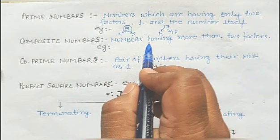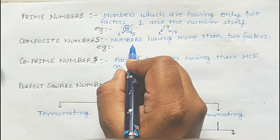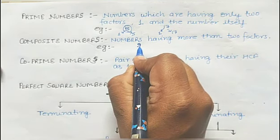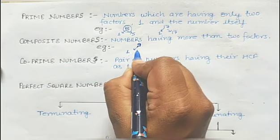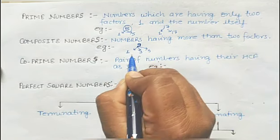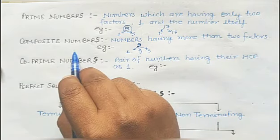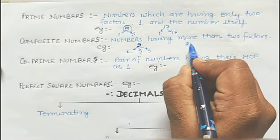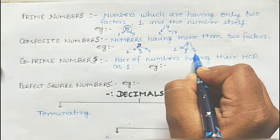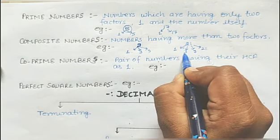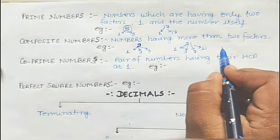Composite numbers are just the opposite: if the number is having more than two factors then it will be known as a composite number. For example, 9 is a composite number because its factors are 1, 3, and 9 — more than two factors. Similarly, 21 has factors 1, 3, 7, and 21 — more than two factors, so it is also a composite number.